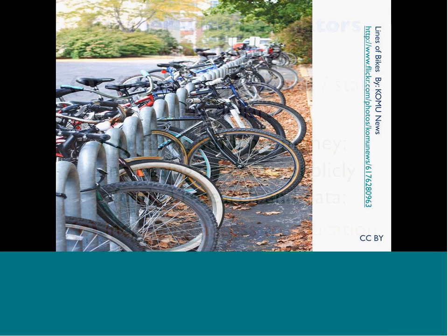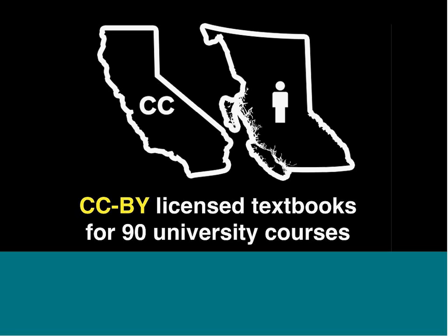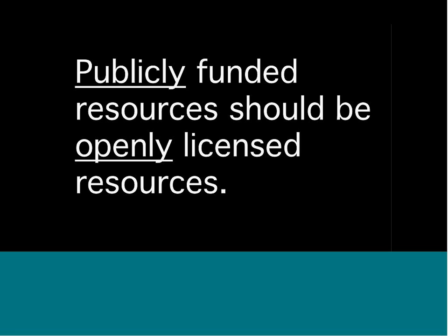To sum up conversations with policymakers, these tend to be the three arguments that work best. If you ask them these three questions, you'll get a yes to every one, and the rest of the conversation becomes easier. California has recently put up $5 million of state general fund money to put out RFPs for CC BY OER textbooks, available to anyone in the world. British Columbia recently announced around 40 textbooks in a similar initiative. I've already mentioned the $2 billion Department of Labor grant. The core idea is that publicly funded resources should be openly licensed.